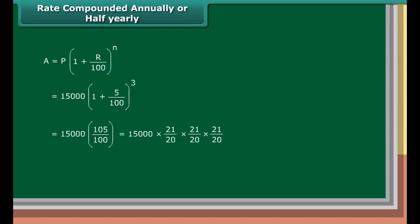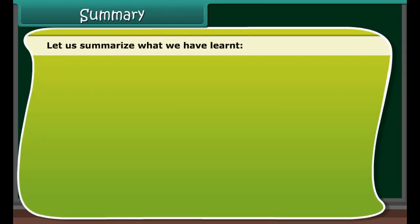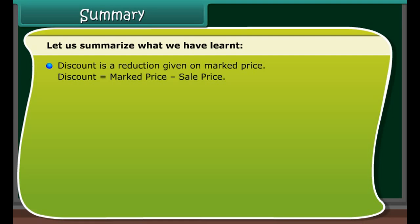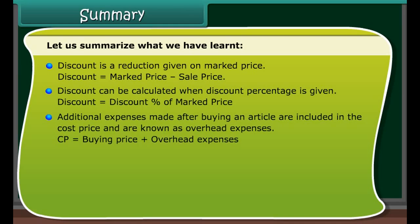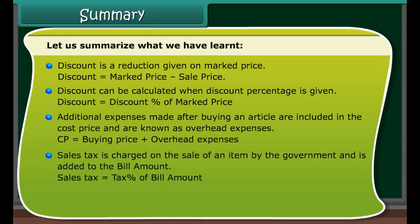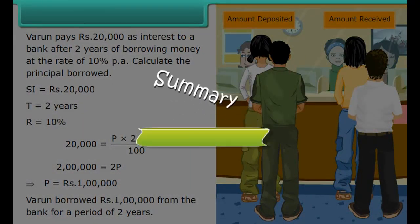Example: What amount is to be repaid on a loan of rupees 15,000 in one and a half years at 10% per annum compounded half yearly? Solution: There are three half years in one and a half years, so compounding is done three times. Rate of interest equals half of 10%, which is 5% half yearly. A equals P into (1 plus R upon 100) raised to N, which equals 15,000 into (1 plus 5 upon 100) raised to the power 3, which equals 15,000 into (21 upon 20) into (21 upon 20) into (21 upon 20), which equals rupees 17,364.37.